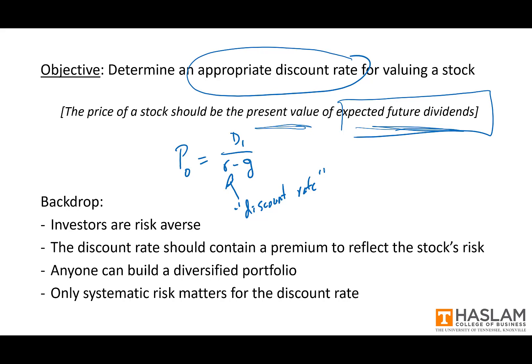As a backdrop, let's remember a few things. First, investors are risk averse. Risk averse investors dislike risk, and all that means is they require compensation for bearing risk in the form of a higher expected return. So the discount rate that we're trying to develop needs to contain a premium to reflect the stock's risk — riskier stocks should have higher discount rates than less risky stocks.